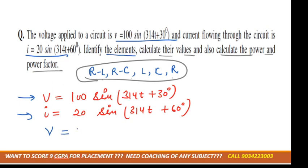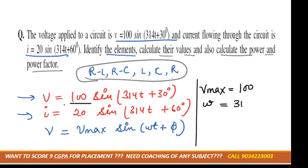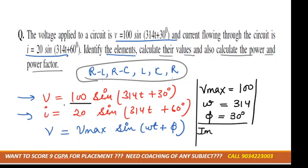The standard form is v = Vmax · sin(ωt + φ). Comparing, Vmax = 100, ω = 314, and φ for voltage is 30°. Similarly, Imax = 20 amperes, ω is the same, and φ for current is 60°.